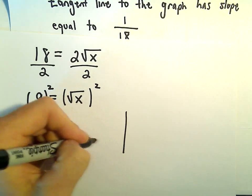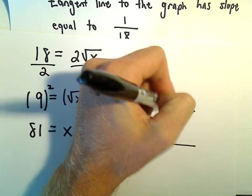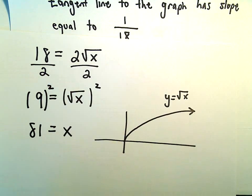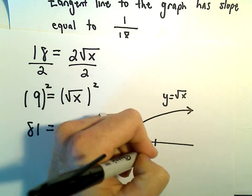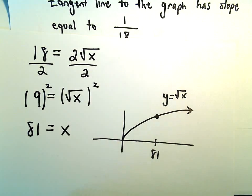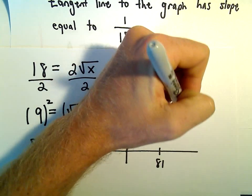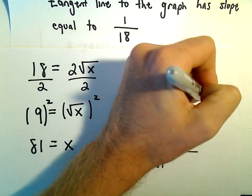So if you graph the original function, square root of x looks something like that. What we've done is we've gone over to the x-coordinate of 81. At the x-coordinate of 81, the slope of that tangent line is going to be 1 over 18.